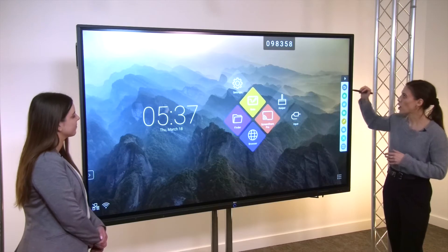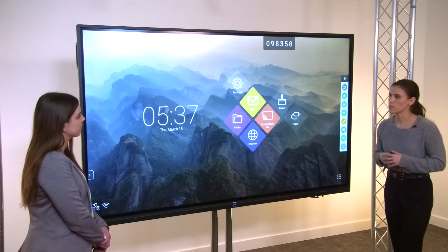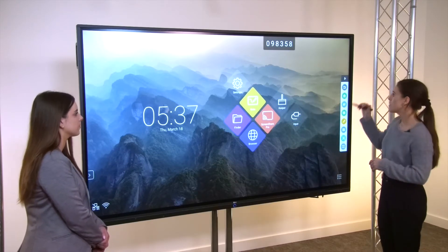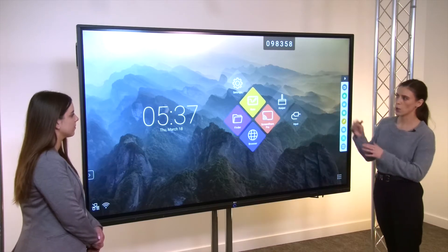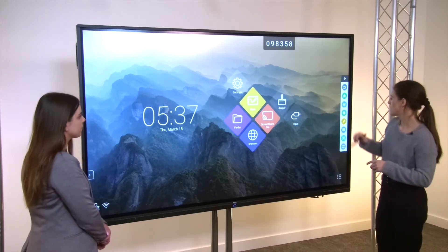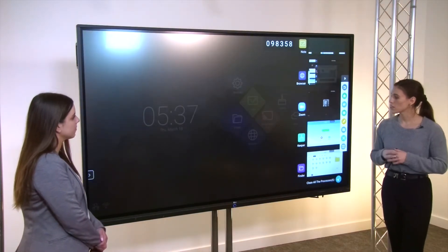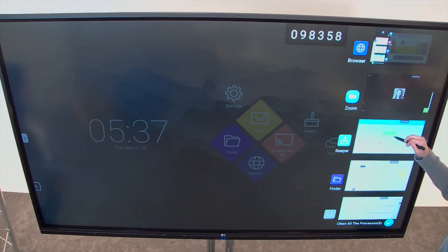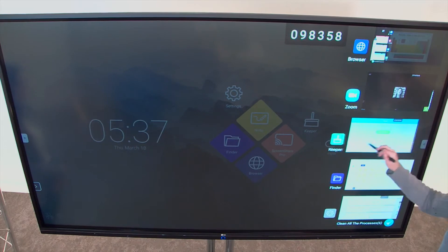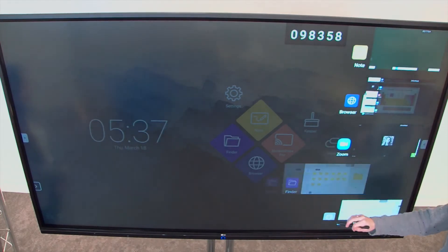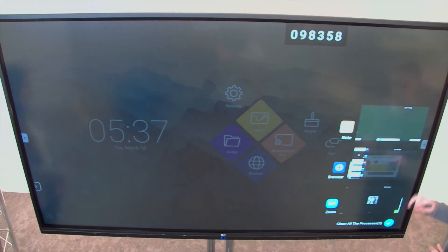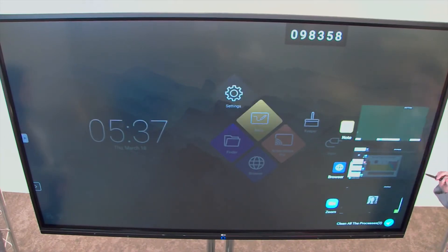Starting off, we have our back button. This is just going to take you to the previous page that you were on. Then we have our home, which will take you to this main home page we have displayed here. Then we have our tabs that we have open at the moment. As you can see, these are all the applications we are in right now. You can easily exit out just by swiping.